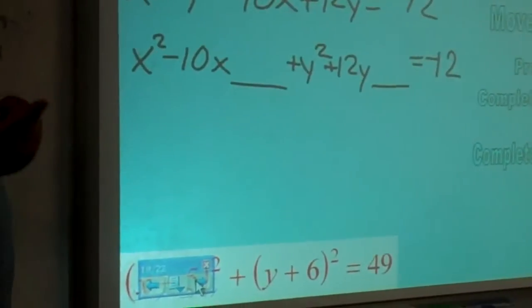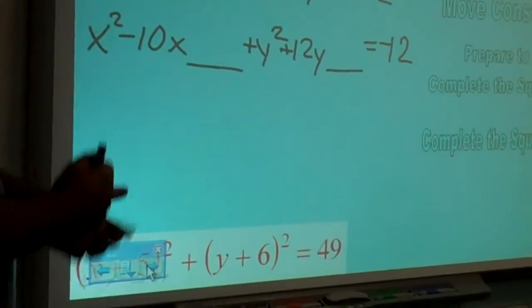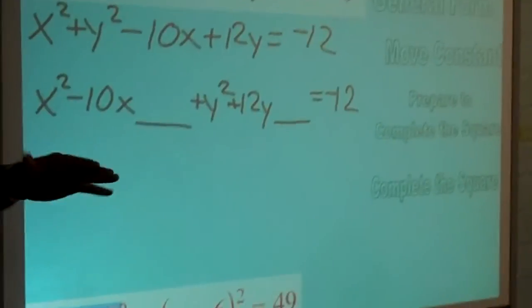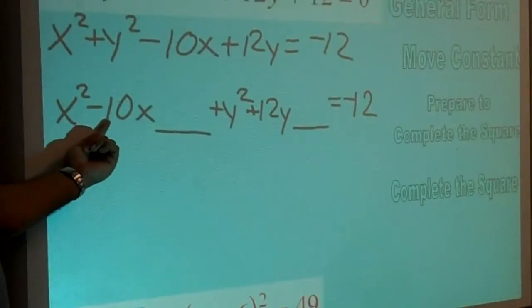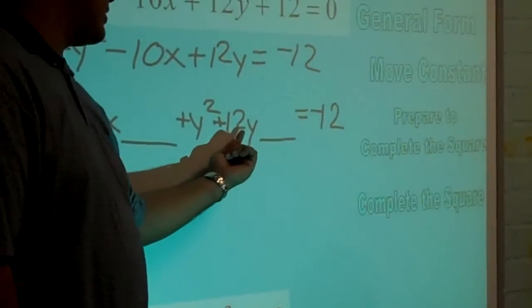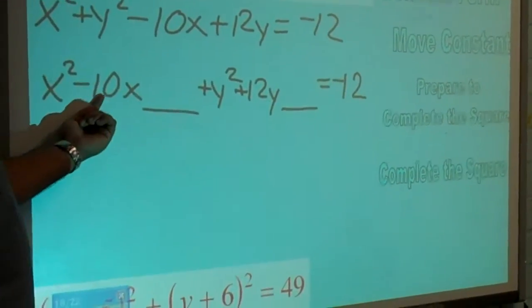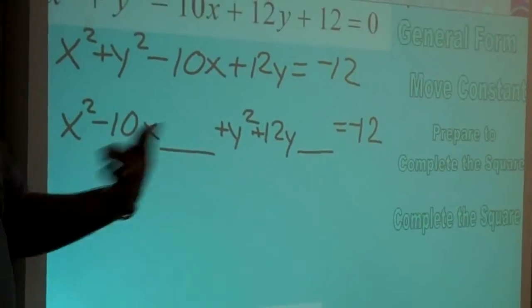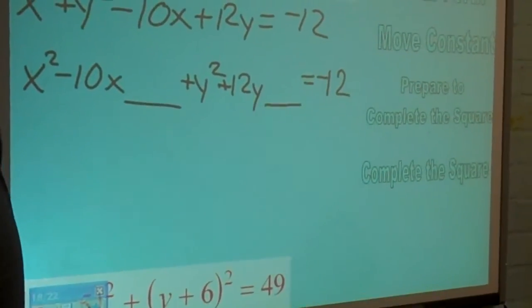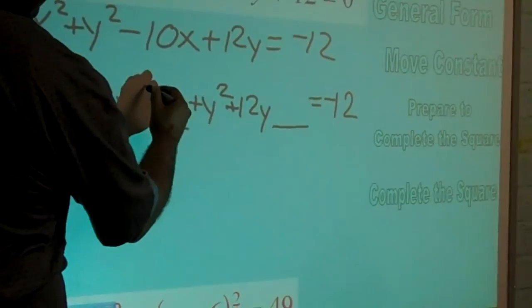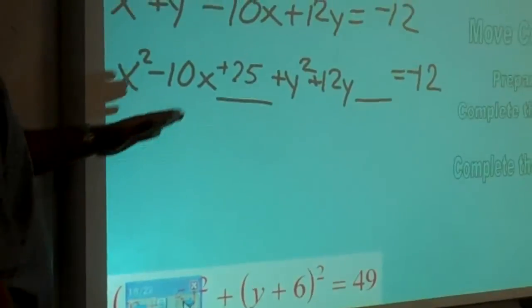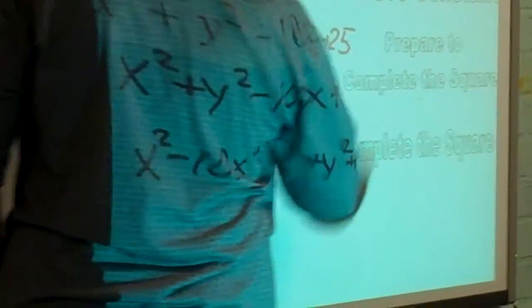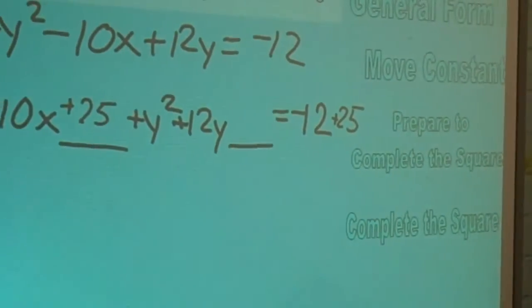What you do to complete the square, and maybe you won't see why just yet, but you're going to see after why it works, is we take the term next to the x term or over here next to the y term. In this case, negative 10 divided by 2. What's negative 10 divided by 2? Negative 5. Negative 5 and square it. That's going to be 25. So I'm going to put a 25 in there. Now be careful. Whatever you do to one side of an equation, you always have to do to the other side. So we also need to add 25 to the other side of the equation.